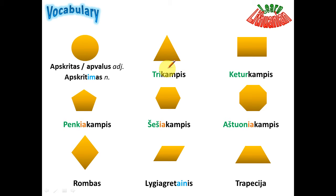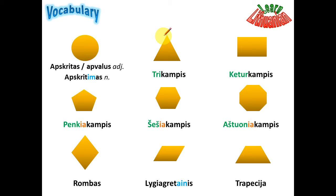Now a note about the stress. If you are talking about the shape — you want to say 'triangle' — you put the stress on the last vowel of the first root. And if you are saying an adjective, like 'a triangular sofa' or 'a rectangular playground', you put the stress differently. So let's just say these words and you'll notice the stress.